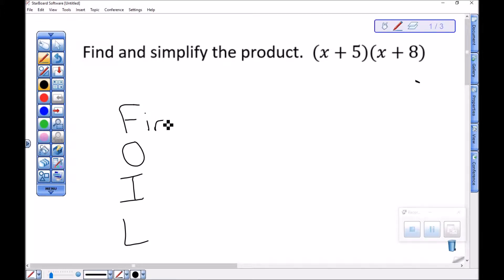The product of the first elements in each binomial. So that would be x times x, which would be x squared.